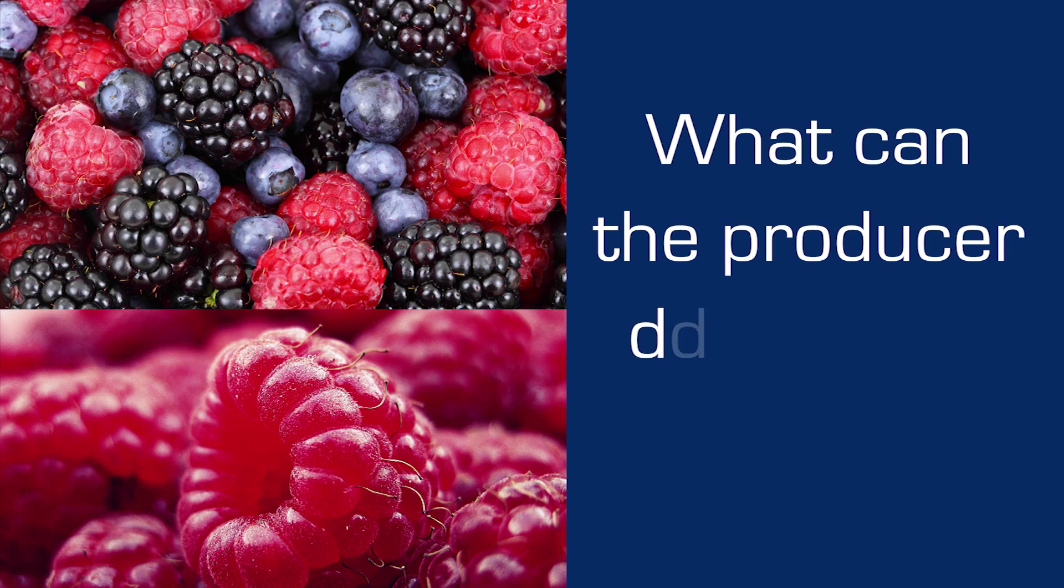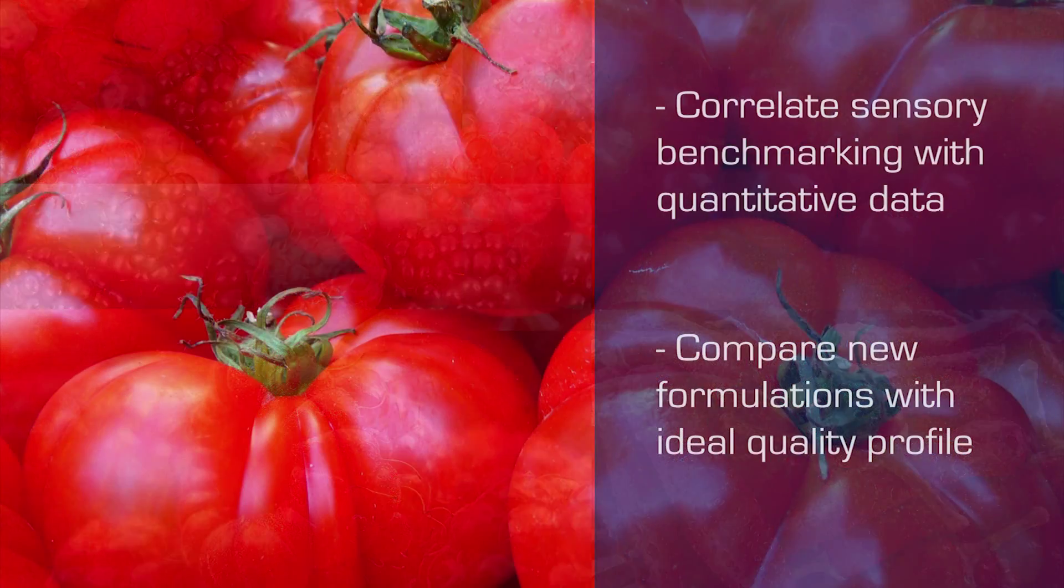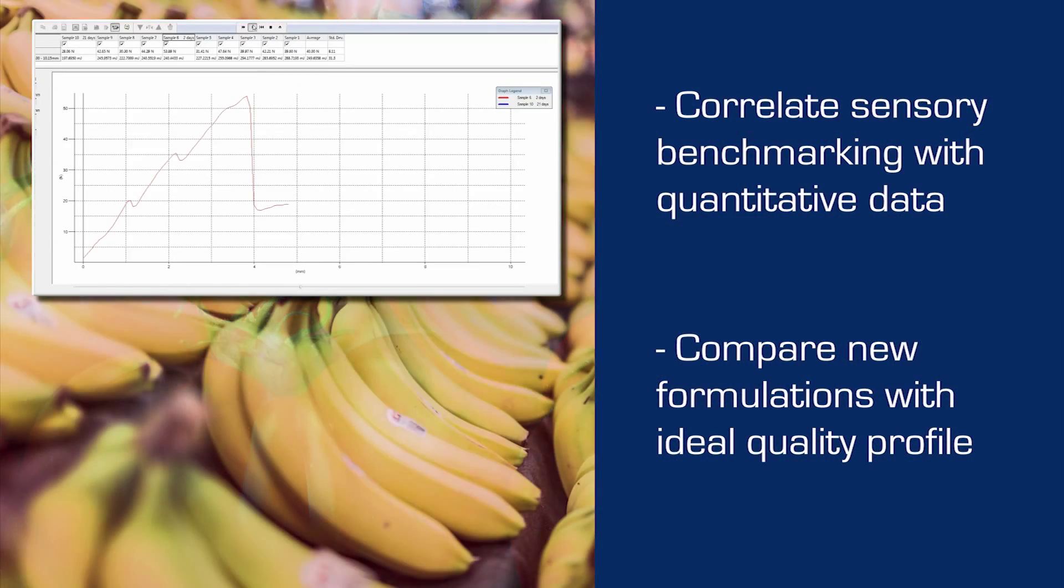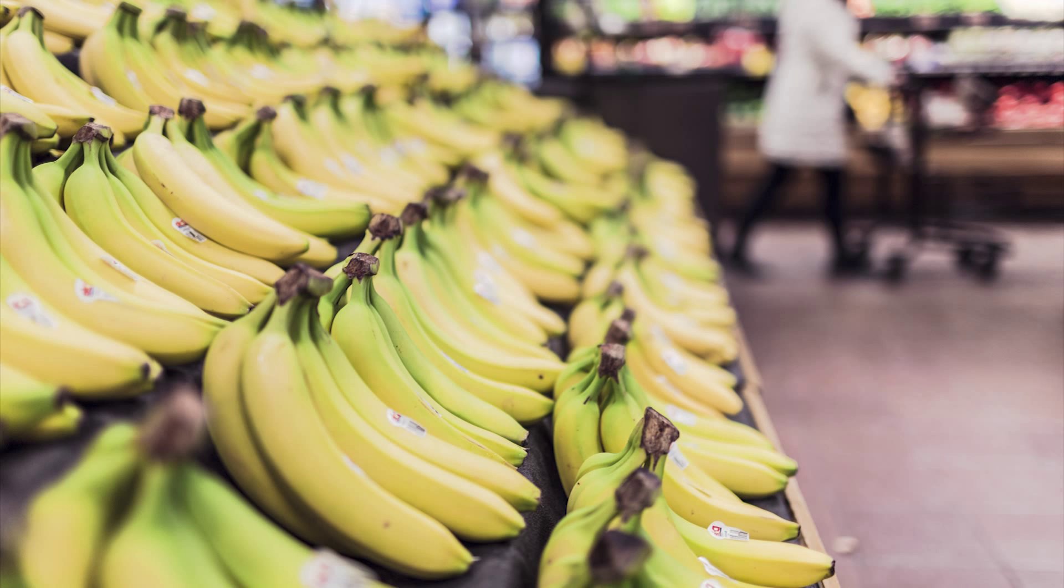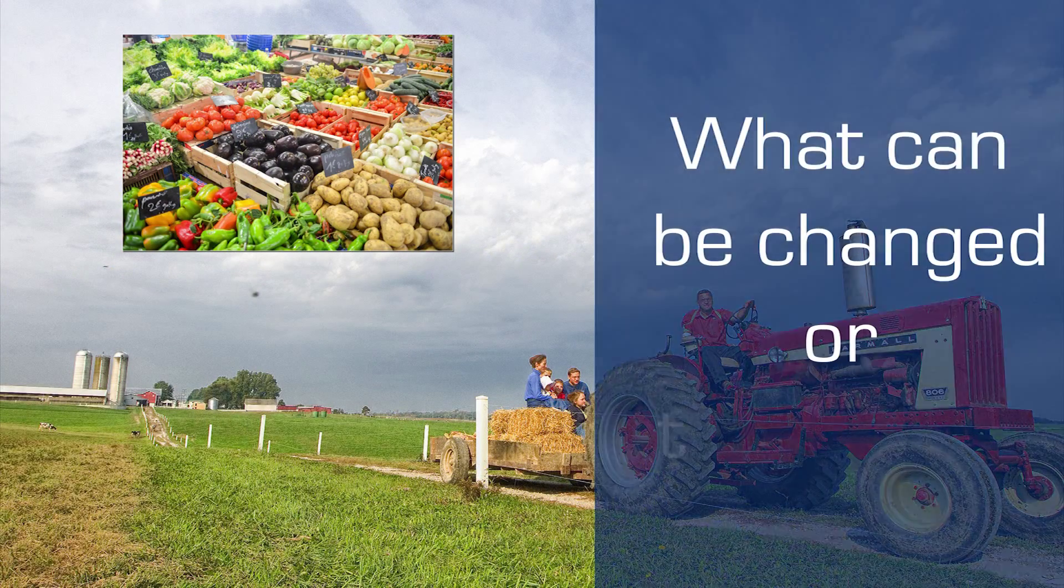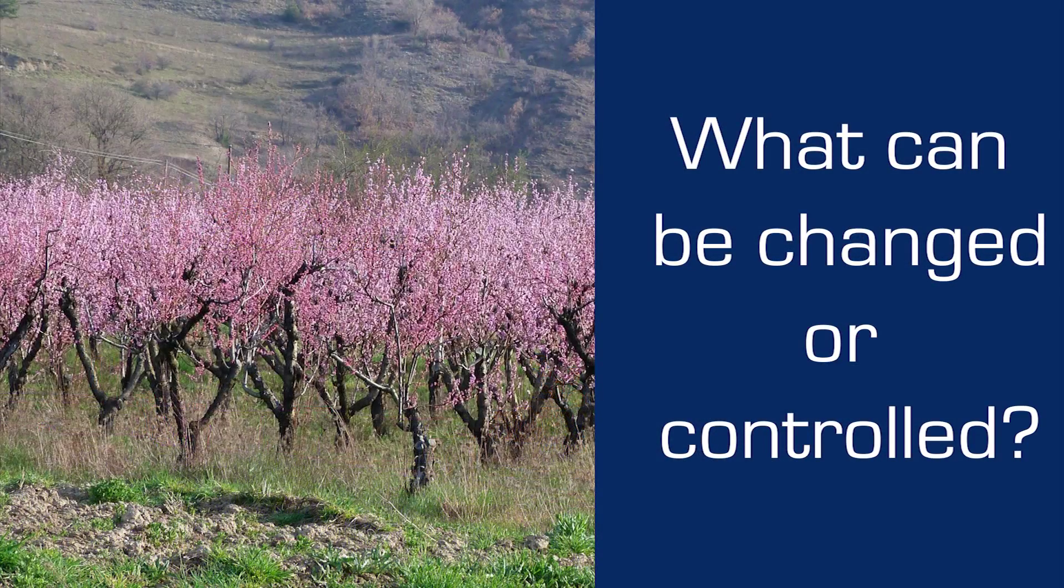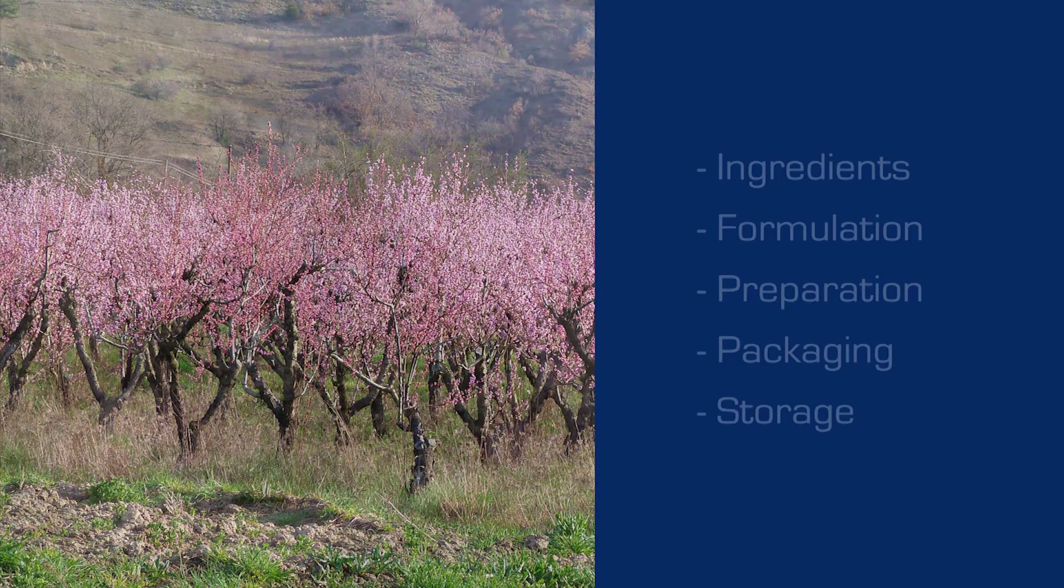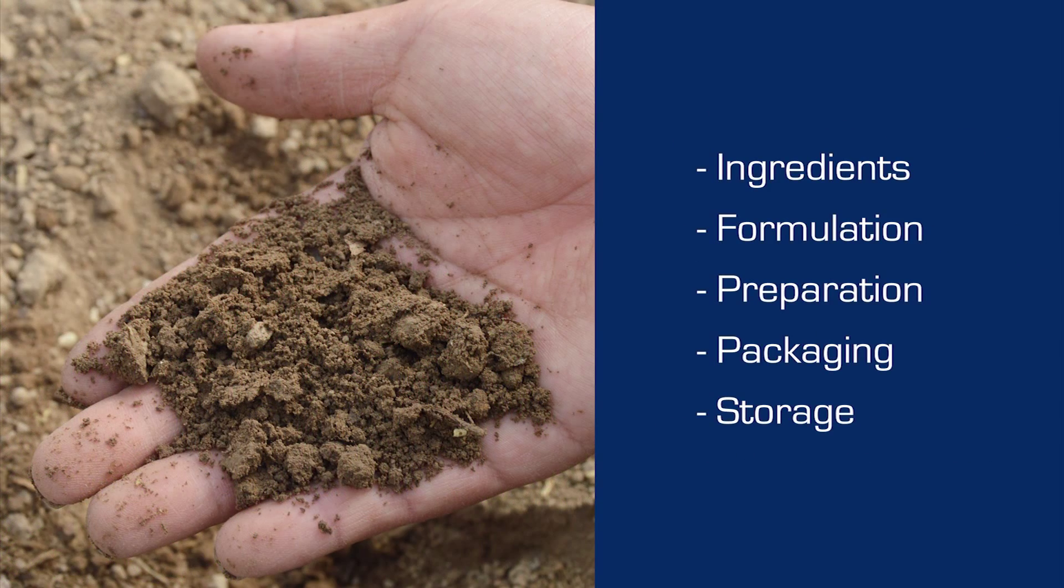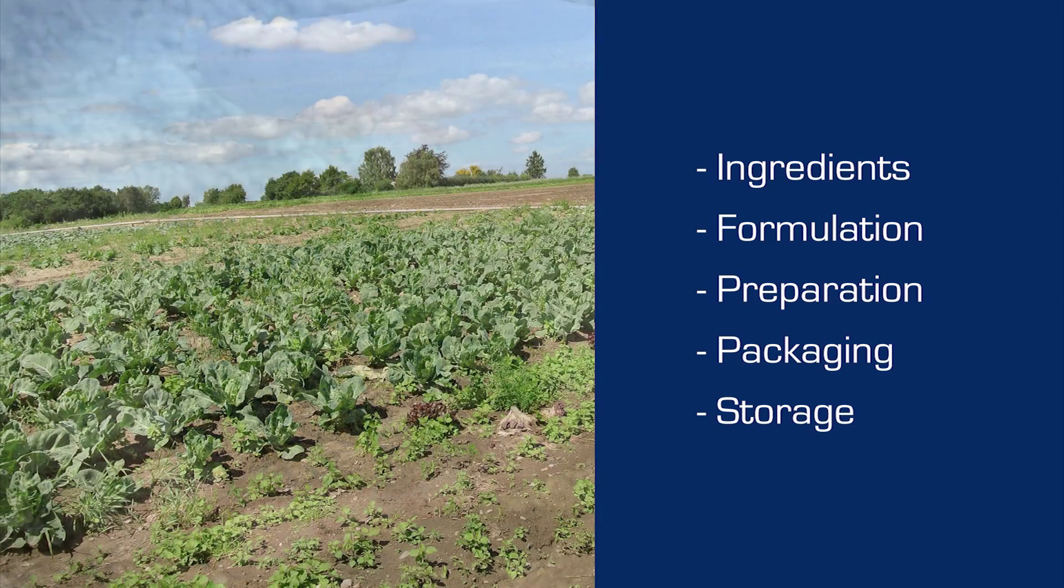Analysis of the measured data brings understanding to the effect of variables in the food supply chain and therefore the ability to optimize quality. With an accurate and repeatable texture analysis capability, the producer of fresh produce can understand the impact of climate or different farming methods such as organic, the effect of modifying plant nutrition or other variables influencing the harvest.